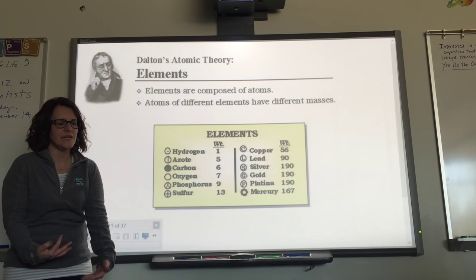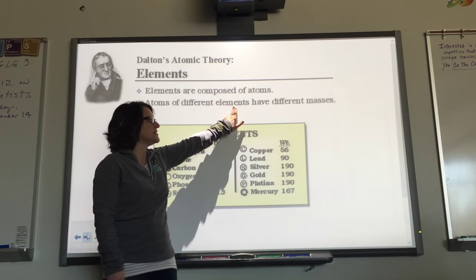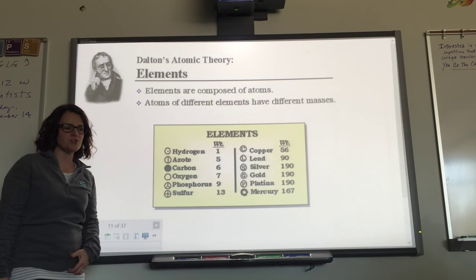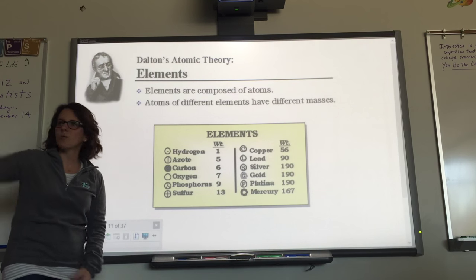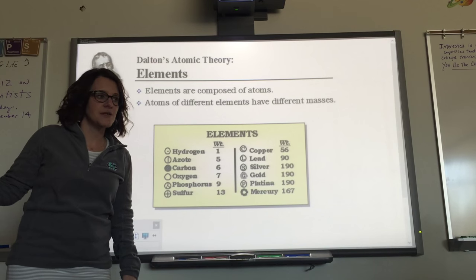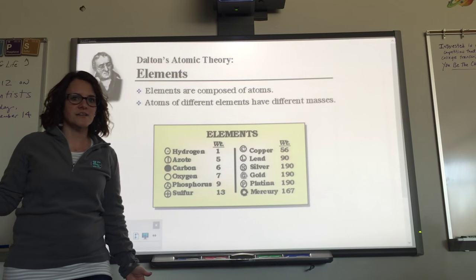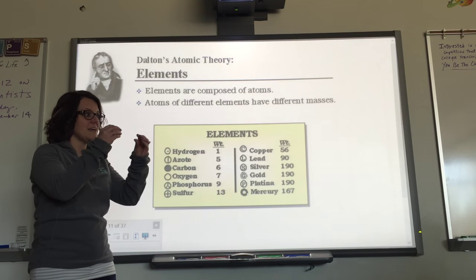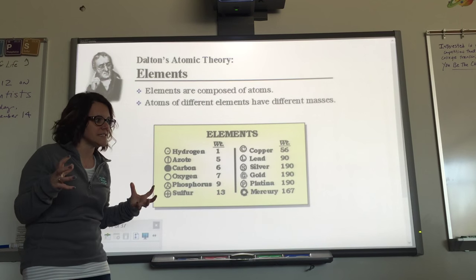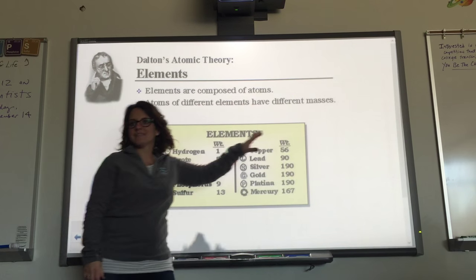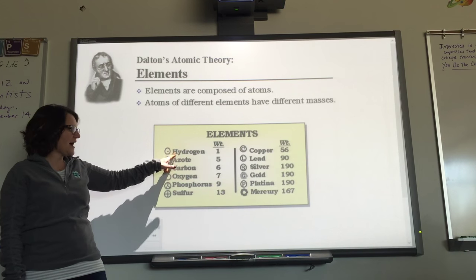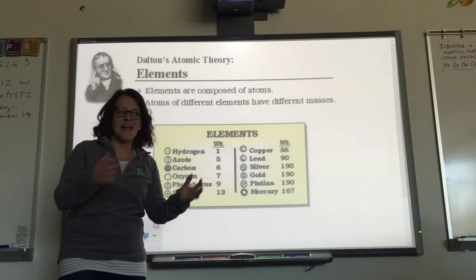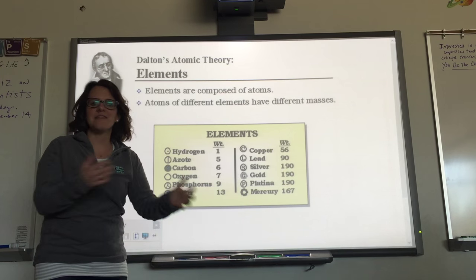His second theory was that atoms of different elements have different masses. Hydrogen — it's number one, so it's small. Gold is number 79, so it's bigger. The newest element created in the lab is number 117 — even bigger. They're numbered based on their proton number, and that adds to how heavy the atom is. Atoms of different elements have different masses, meaning atoms are unique to each element.